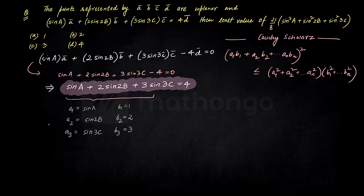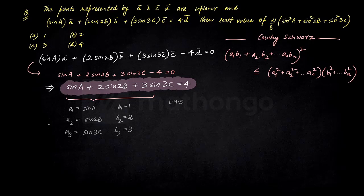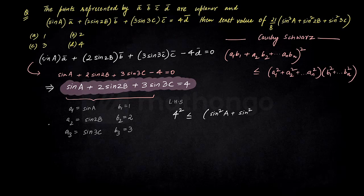If you notice, this is exactly what is required. So LHS becomes (sin a·1 + sin 2b·2 + sin 3c·3)², which is 4² = 16, since from the coplanarity condition we already know that sum equals 4. This is less than or equal to (sin²a + sin²2b + sin²3c) × (1² + 2² + 3²). So if we apply Cauchy-Schwarz here, next time you encounter such a problem you should be able to use this approach immediately.